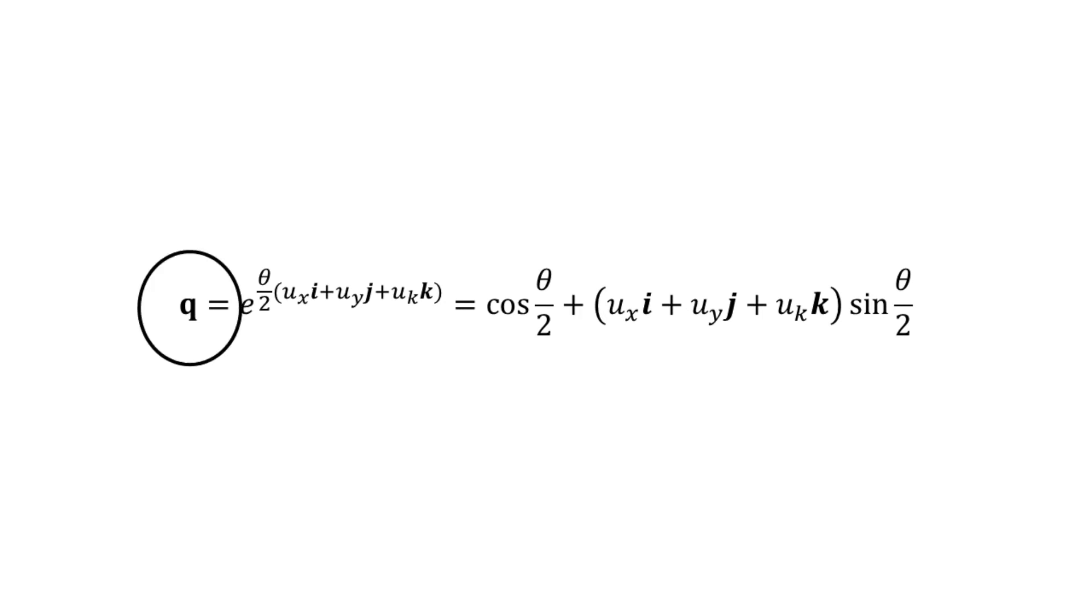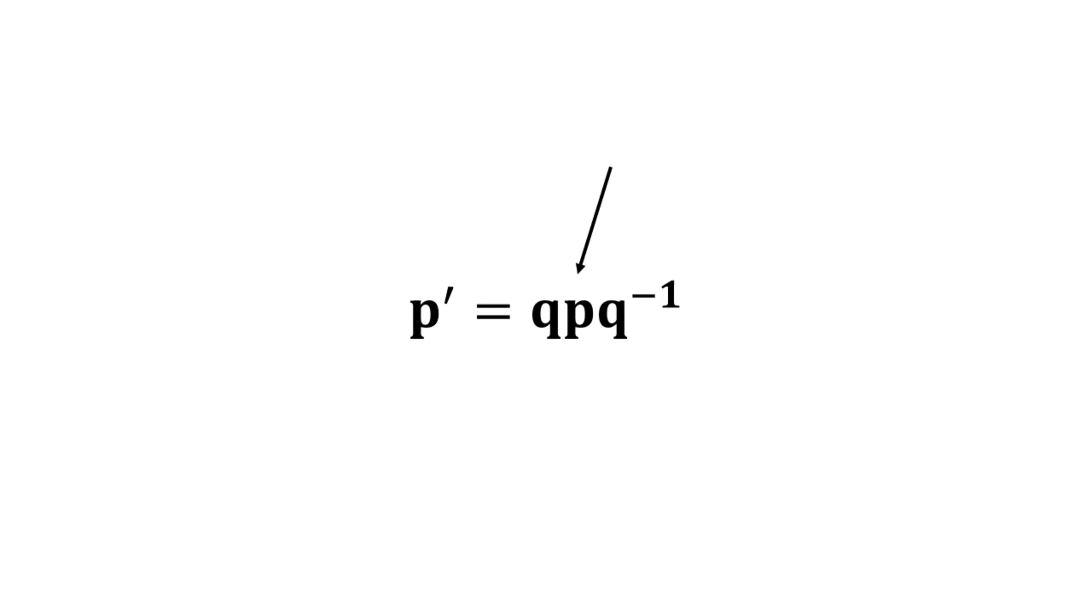Once we have this quaternion q, our rotation of some vector p is given by this. The rotated vector equals our rotation quaternion times the original vector times what's called the complex conjugate of our rotation quaternion. This is basically just the rotation quaternion, but the imaginary parts are all negative.